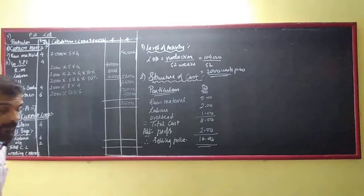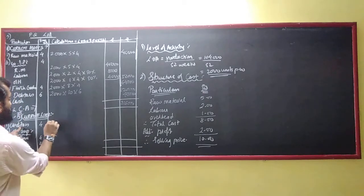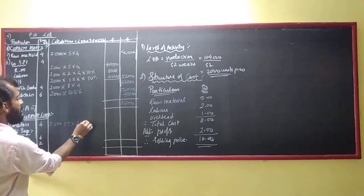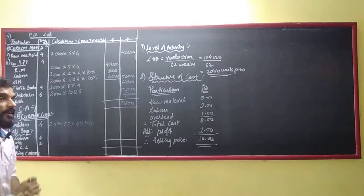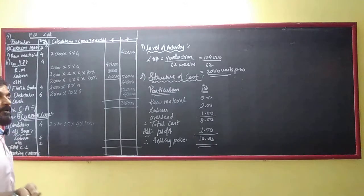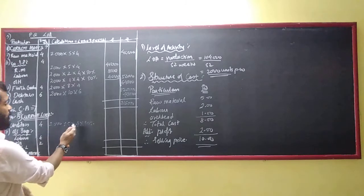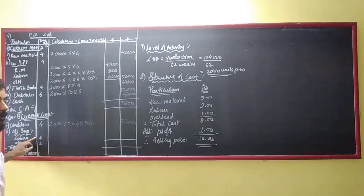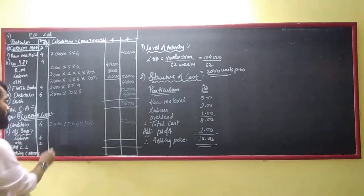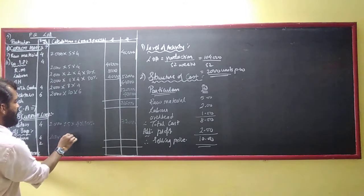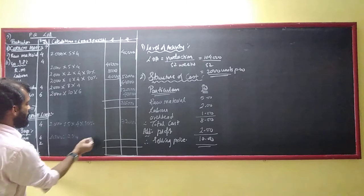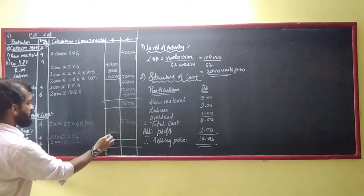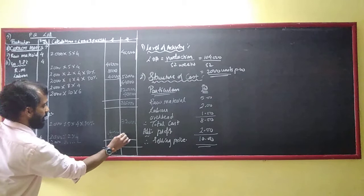Speaking about my current liability, 50% of purchases are on cash, so creditors: 80 x 50% equals 32,000. Here they have separately given 4 weeks for labour and 2 weeks for overhead, so we have to calculate accordingly. 2000 x 2 x 4 equals 16,000 for wages, 2000 x 1 x 2 equals 4,000 for overhead.